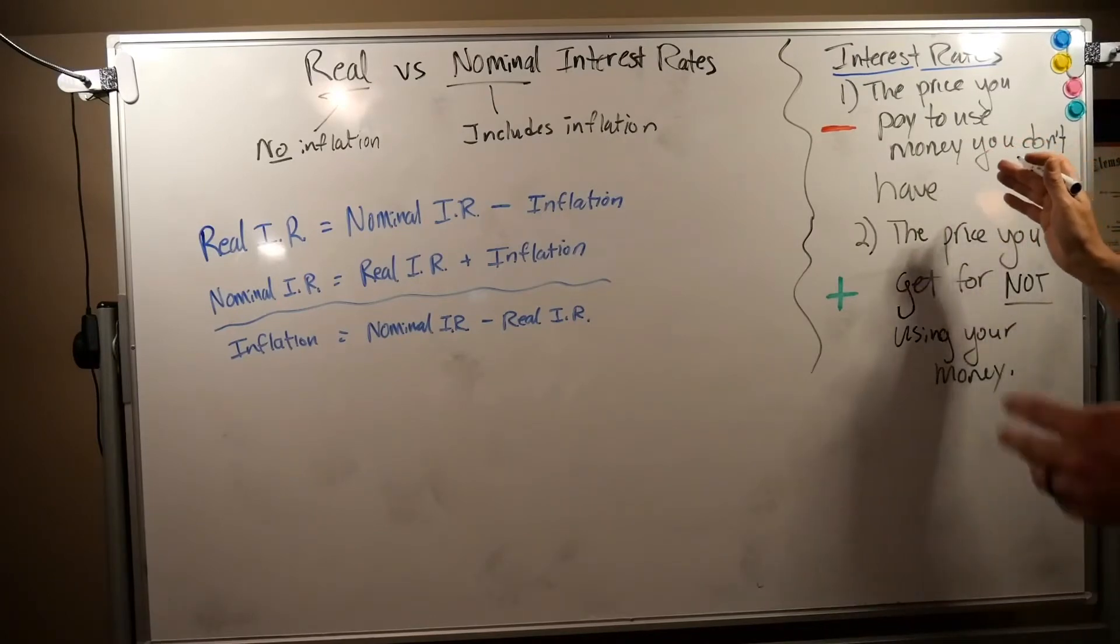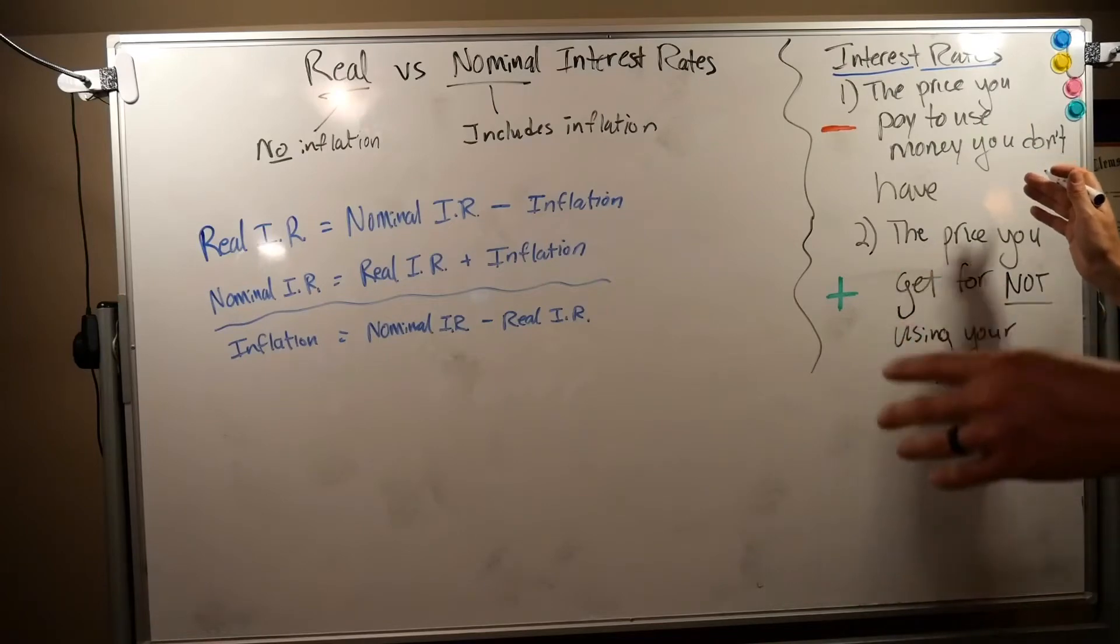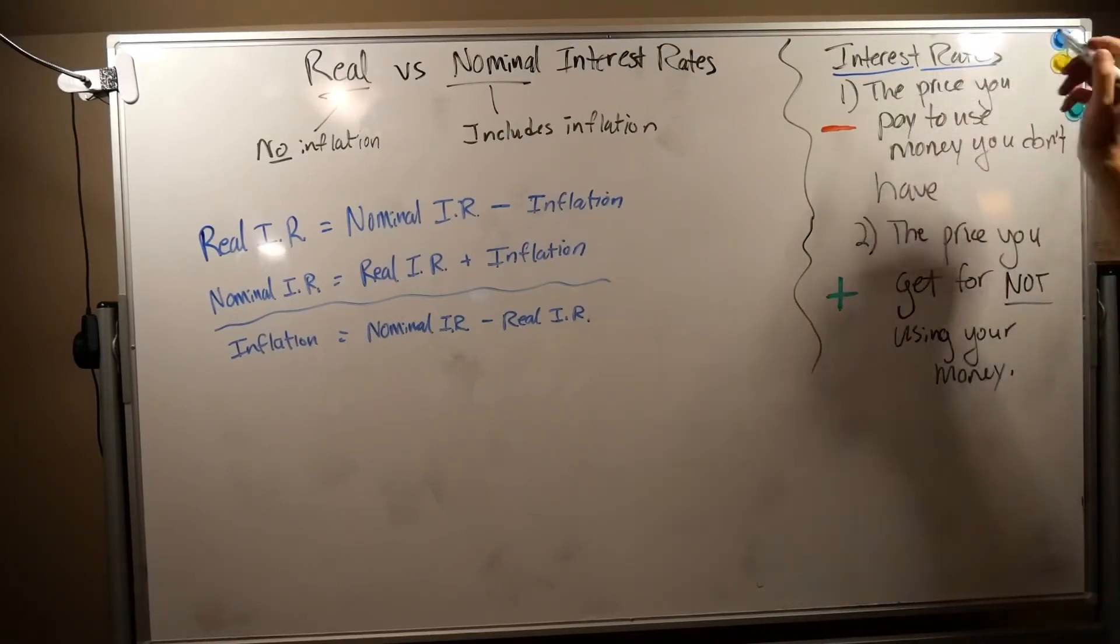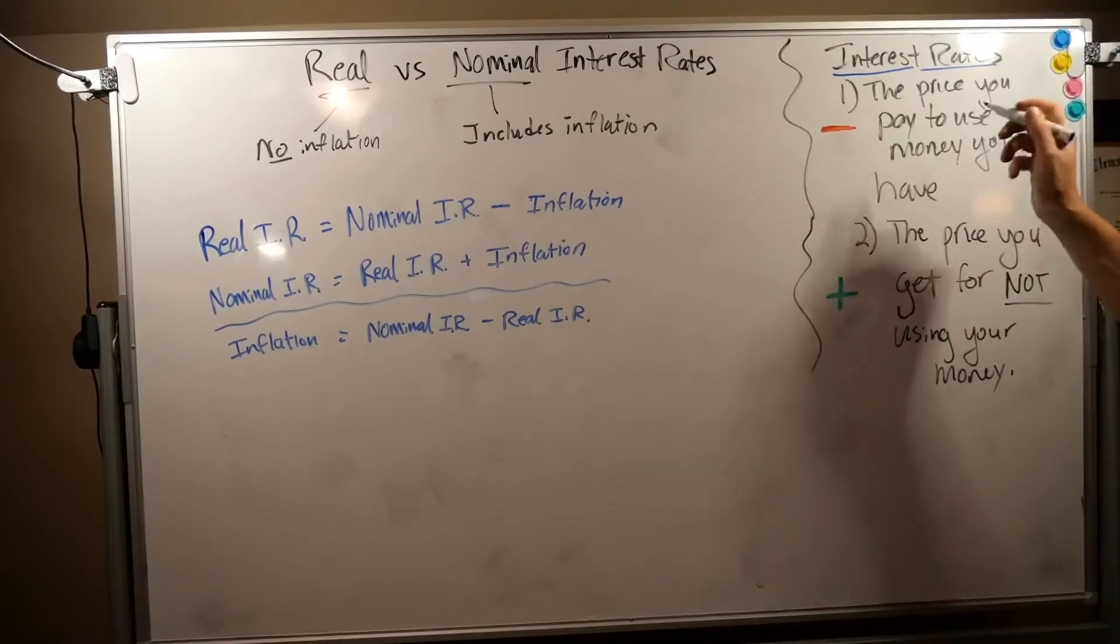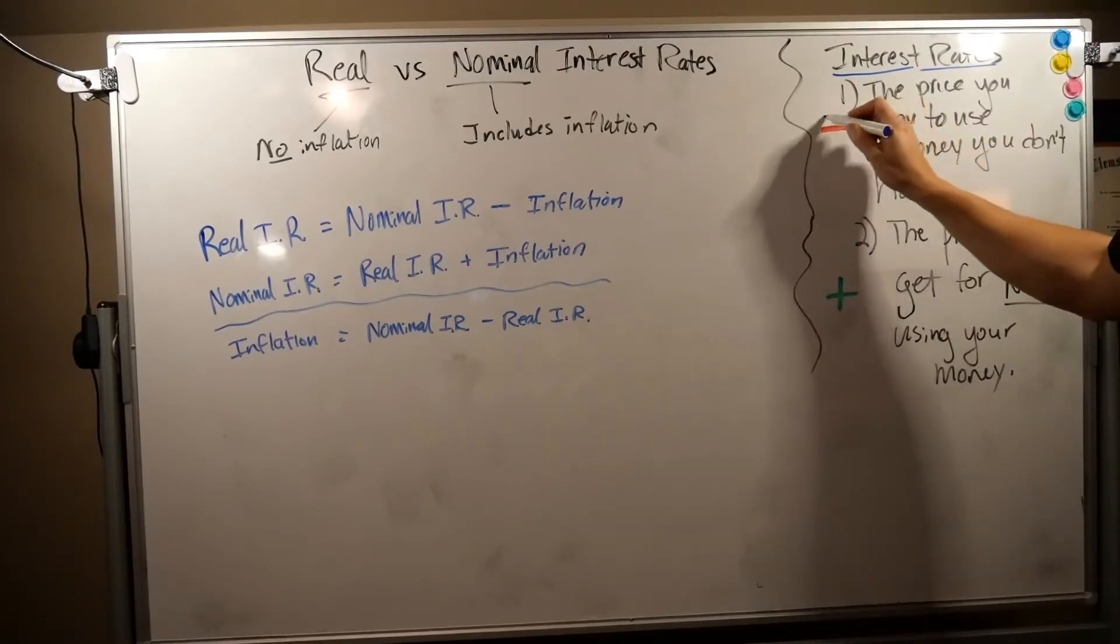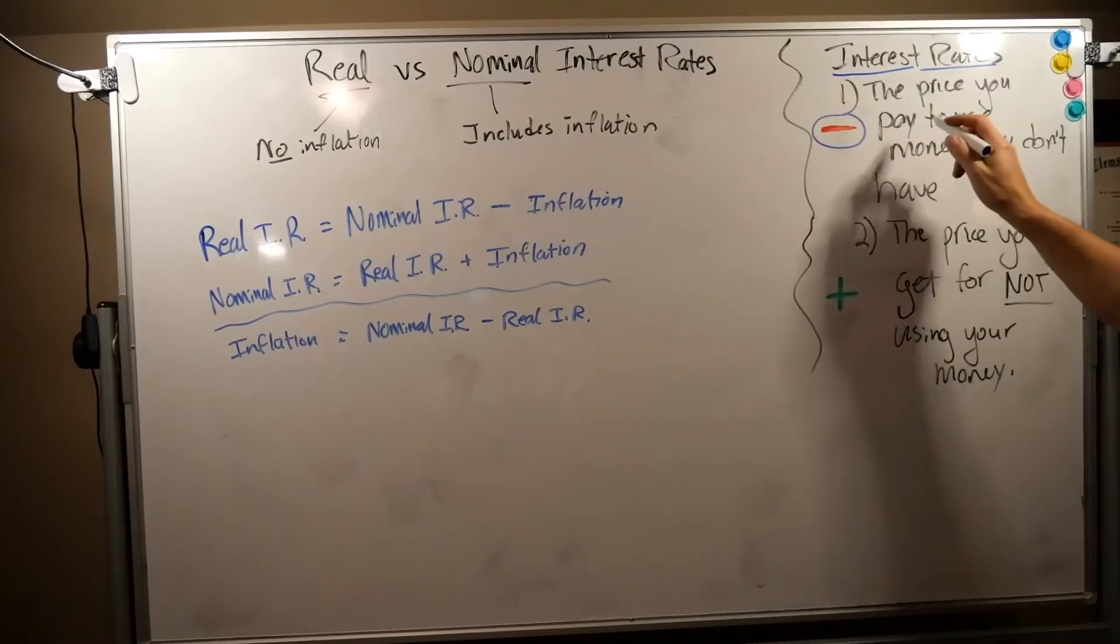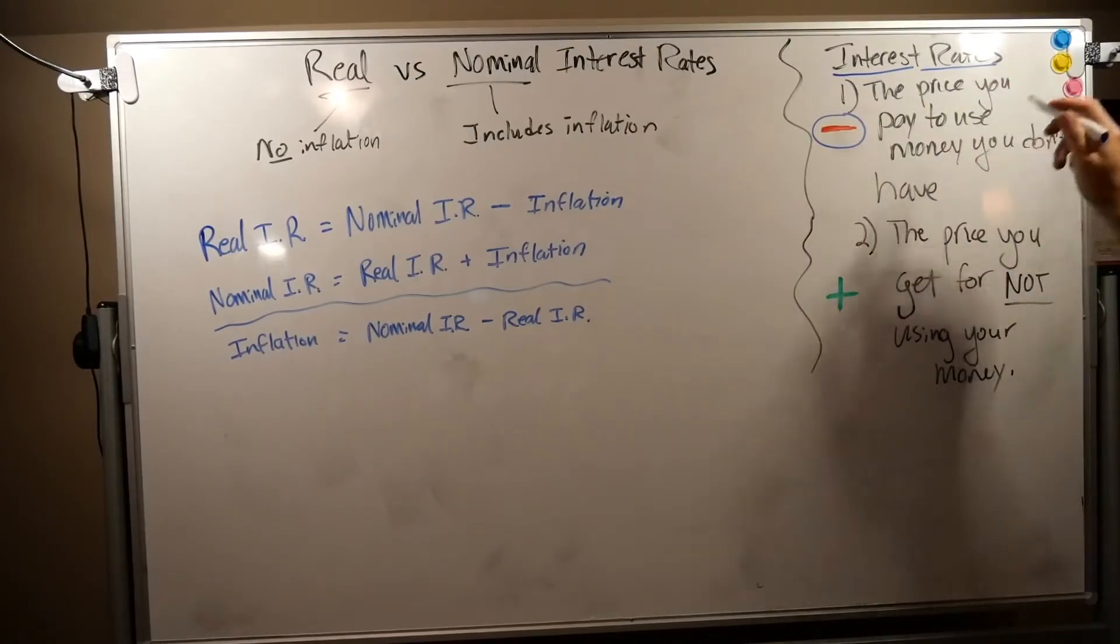Interest rates on student loans—you're using money that you don't have. There's a price to that, and that's the interest rate. A lot of people typically know that takes money away from you. That's why there's a big minus there. Interest rates are first the price you pay to use money you don't have.